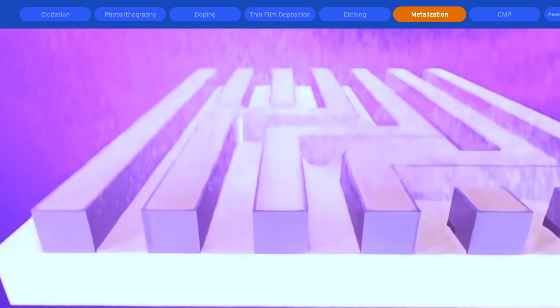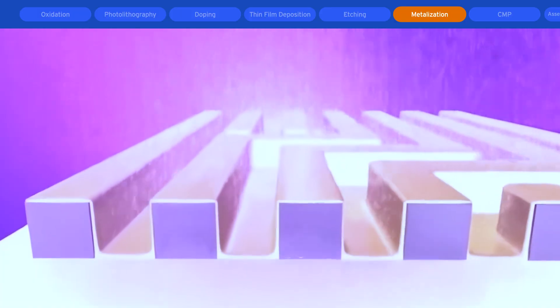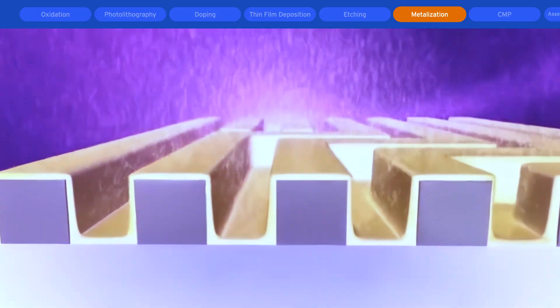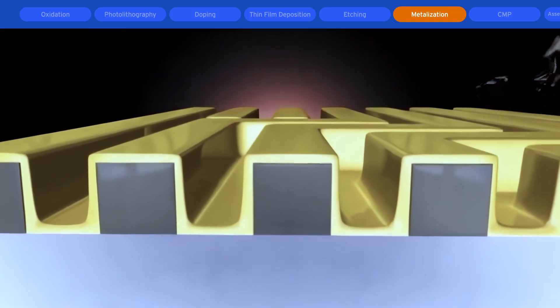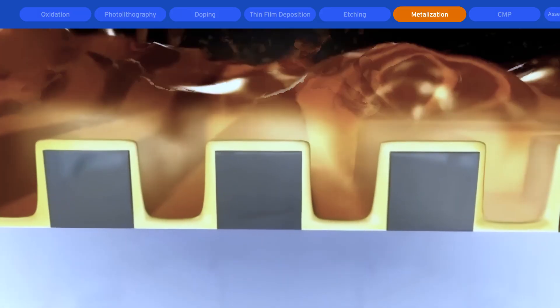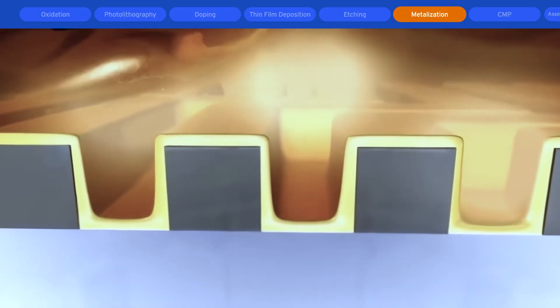They may be sputtered onto the wafer surface from solid targets, deposited using gaseous or liquid precursors in chemical vapor deposition, or in the case of copper, electroplated from a copper solution. All of these processes are conducted within enclosed mini environments.